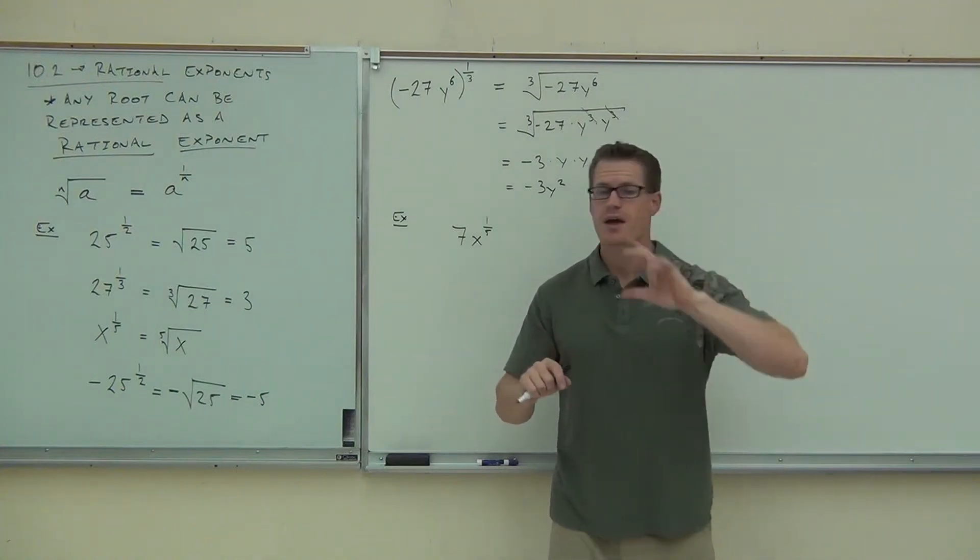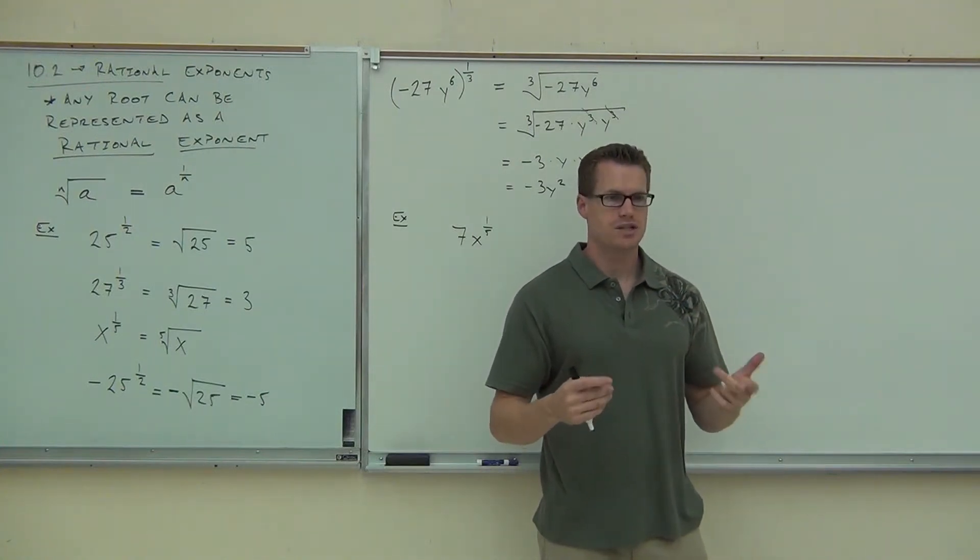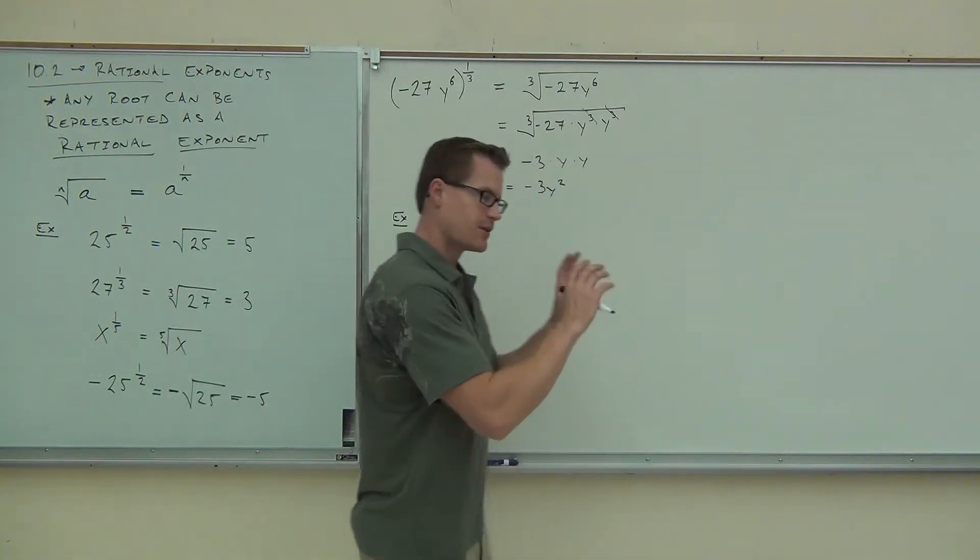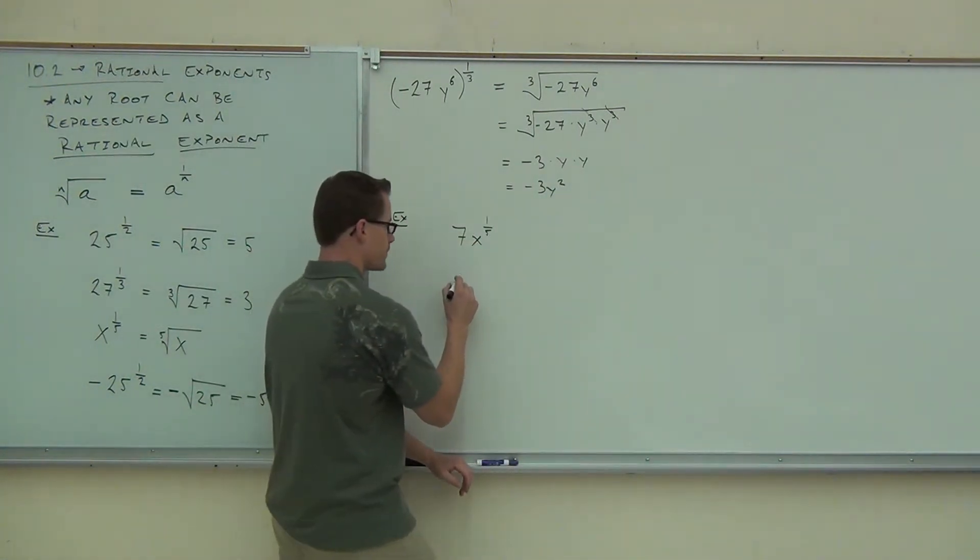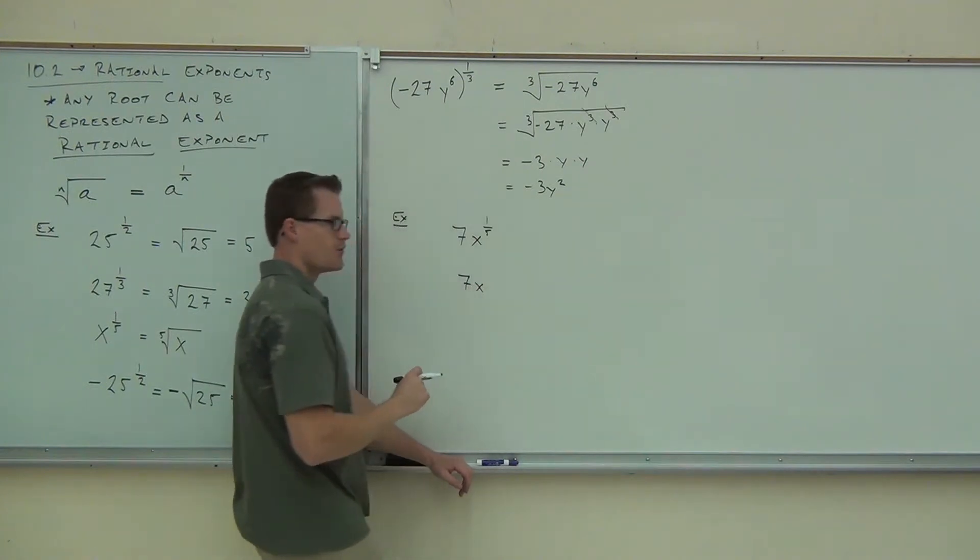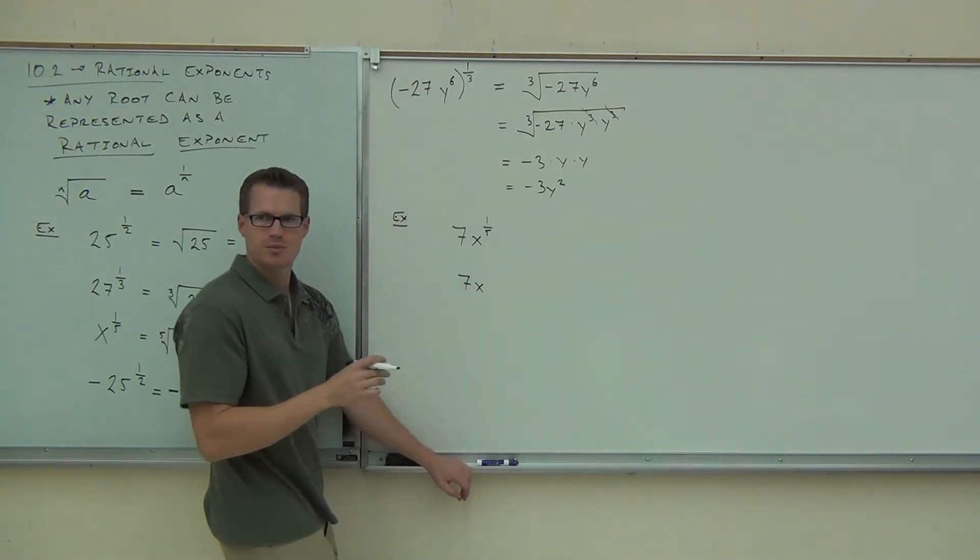It's actually not 7 to the 1/5th. If I wanted to show 7 to the 1/5th, 7 and x to the 1/5th, here's how I'd do it. I want you to see the difference here. If I want to show both of them, what would I need to put?